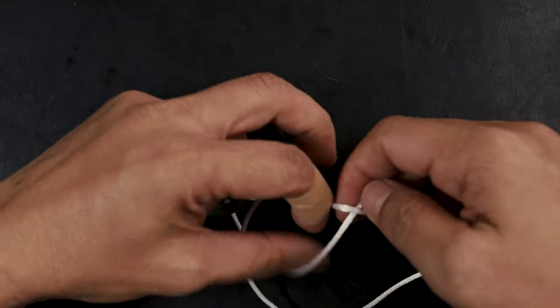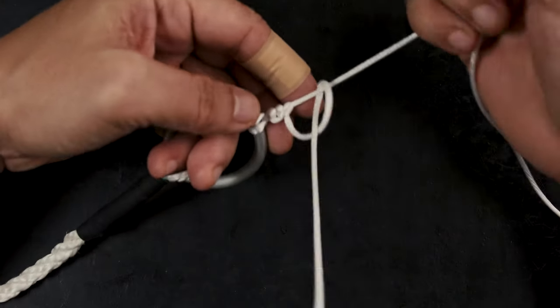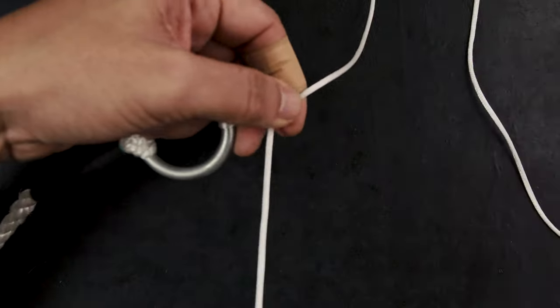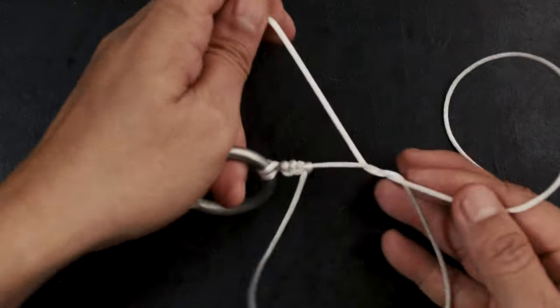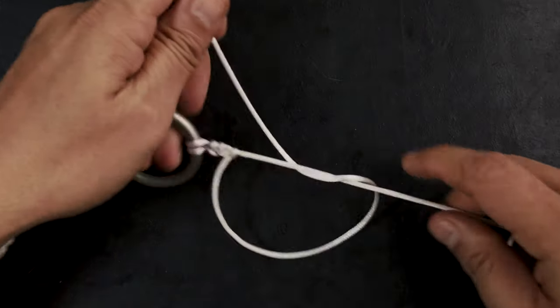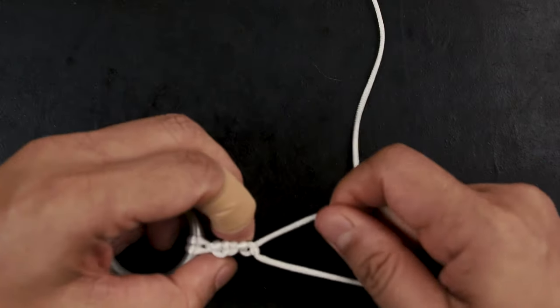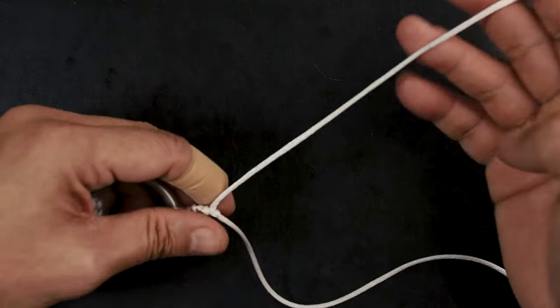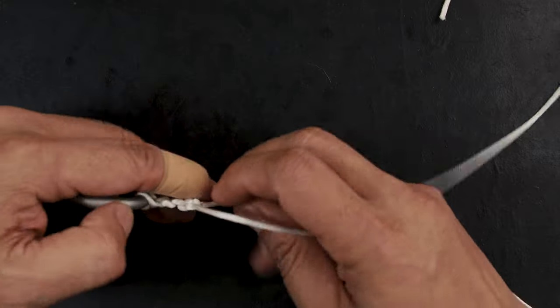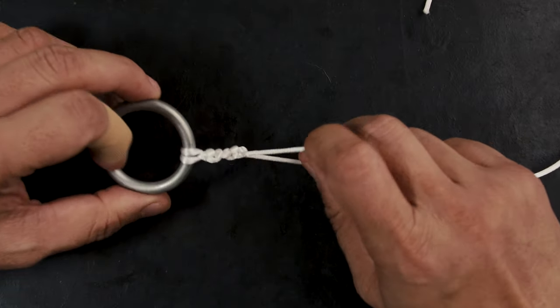Like so, then you go under again. Tighten this up. Over, under. As you can see, it's just really a series of alternating half hitches. Now can you use just the overhead half hitches? Yes, no problem, it's really up to you.